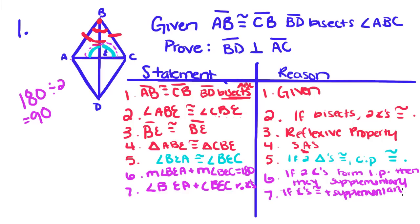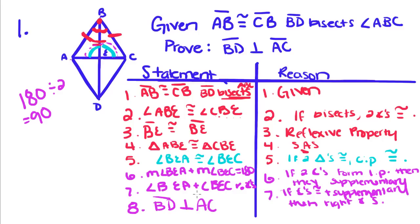Now we have one last step: BD is perpendicular to AC, because if right angles are formed, the lines are perpendicular — right angles are only formed by perpendicular lines. That's the proof showing that lines are perpendicular. Make sure you come back and watch our next lesson where we're going to do more proofs using the definition of a rectangle.